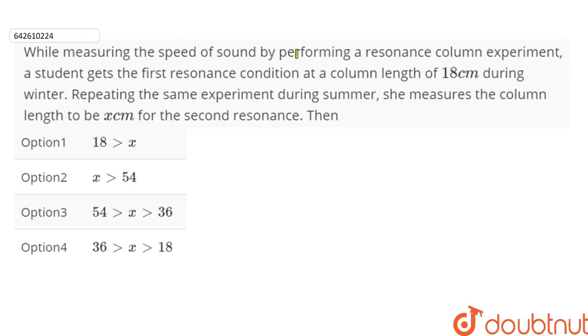While measuring the speed of sound by performing a resonance column experiment, a student gets the first resonance condition at a column length of 18 cm during winter. Repeating the same experiment during summer, she measures the column length to be x cm for the second resonance.